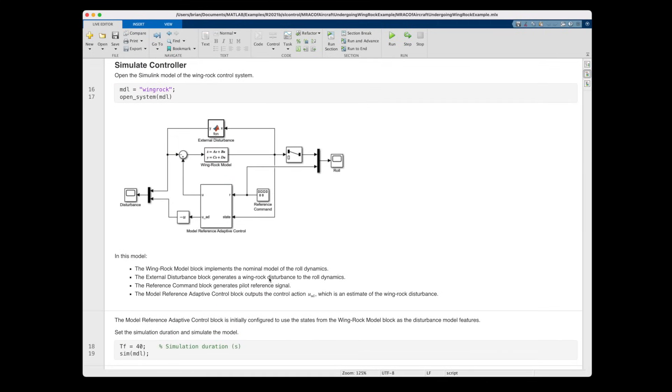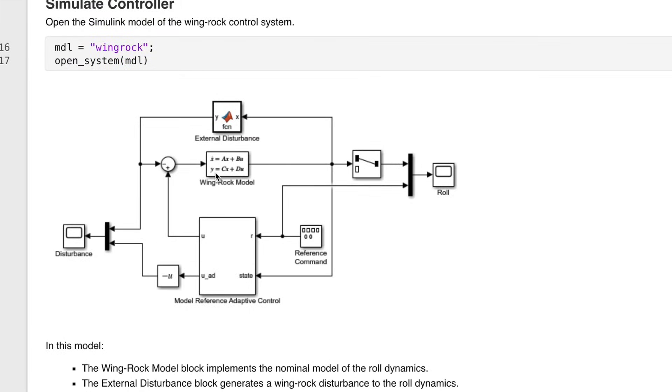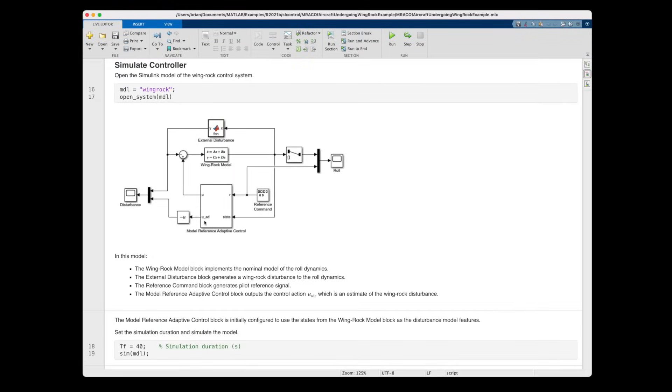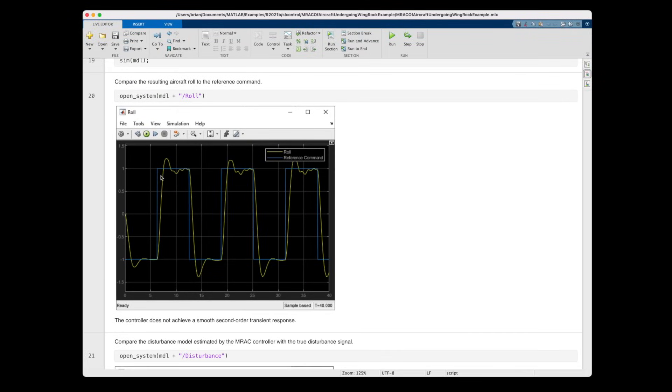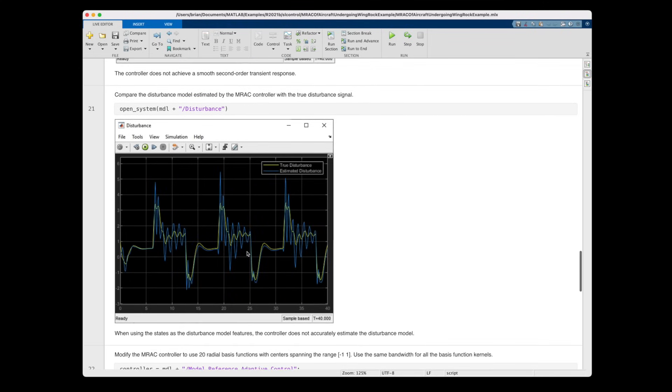Now we can simulate the performance of the controller in Simulink. Here we have the true airplane model and the true external disturbances, and then this block is the model reference adaptive controller that's taking in the reference command in the current state of the system, and then using an adaptive mechanism, it's learning the parameters of w in order to cancel out the disturbance. And if we scroll down, you can see the role tracking capabilities of this controller when we use phi defined as system state. And we can see the comparison between the estimated and true disturbance.